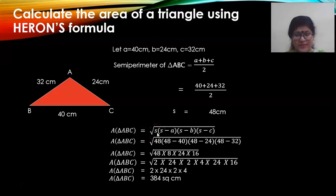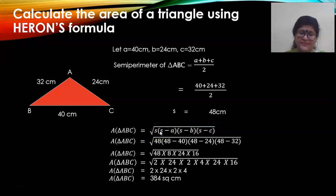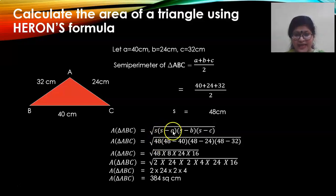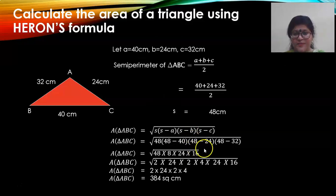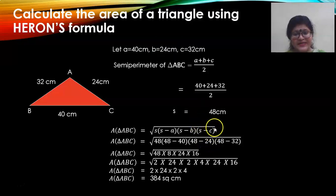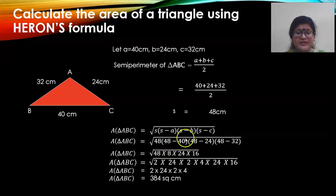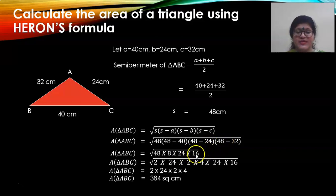Substitute the values: S is 48. S minus A is 48 minus 40 because A is 40. S minus B is 48 minus 24, and S minus C is 48 minus 32. When you calculate the differences: 48 minus 40 is 8, 48 minus 24 is 24, and 48 minus 32 is 16.